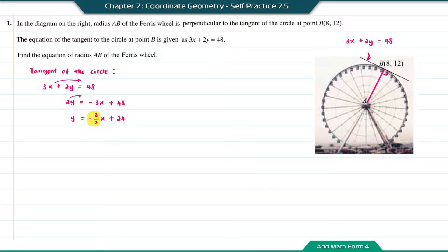As the radius AB is perpendicular to the tangent, when we multiply the two gradients together, it will give us -1. So the gradient AB equals -1 divided by -3/2, which is the same as -1 × -2/3. So the answer is positive 2/3.